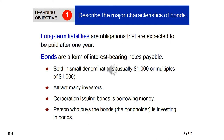Let's get started with the first learning objective for today: describe the major characteristics of bonds. But before we do that, let's take a quick look at long-term liabilities. These are basically obligations that are expected to be paid after one year, so the maturity or due date is longer than one year. With that cutoff point we can distinguish between short-term liabilities covered before and long-term liabilities.